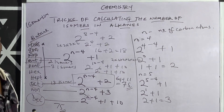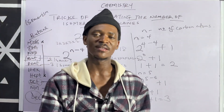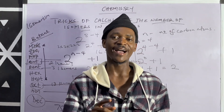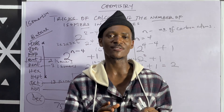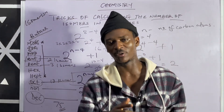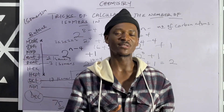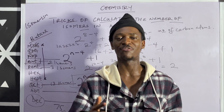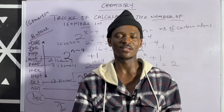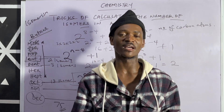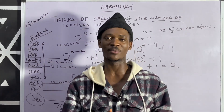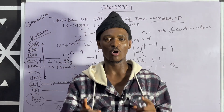That's how you calculate the number of isomers for the members of the alkane series from the first to the tenth member. Remember, isomerism of alkanes starts from butane. Isomerism involves different structural representations that share the same general molecular formula. If you found this helpful, please subscribe to this channel and share with your friends. All the best!